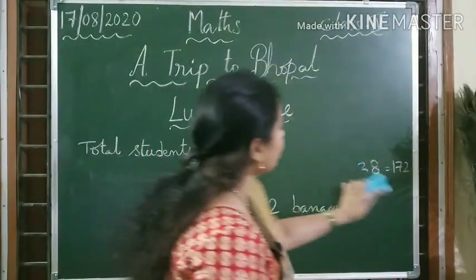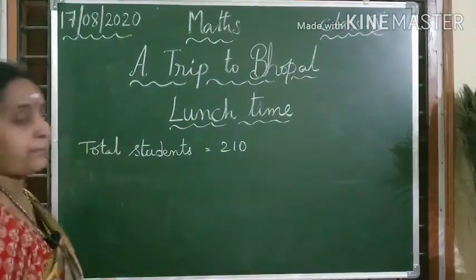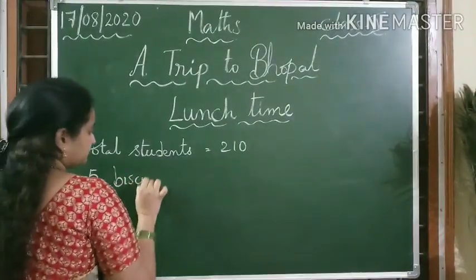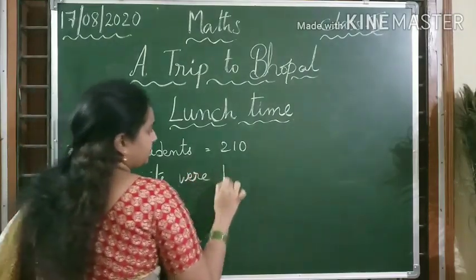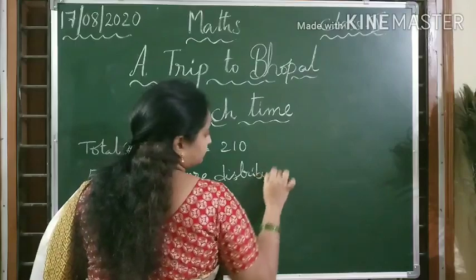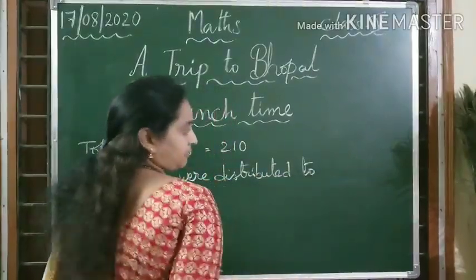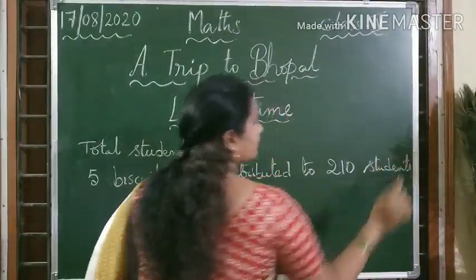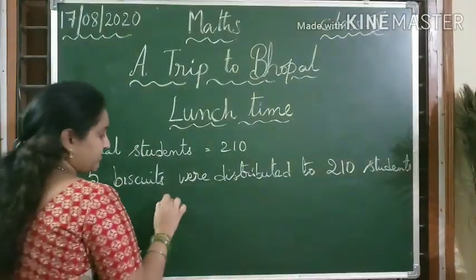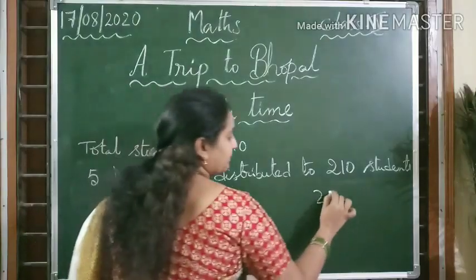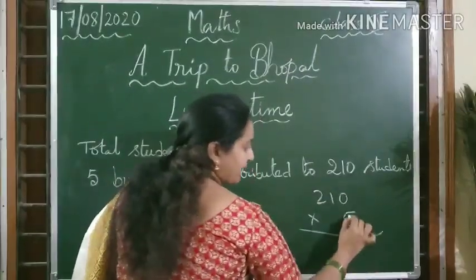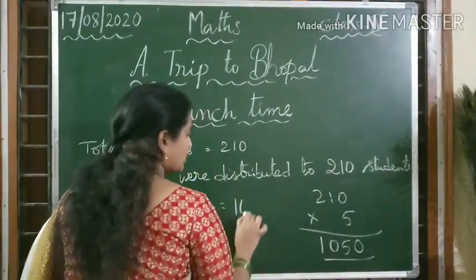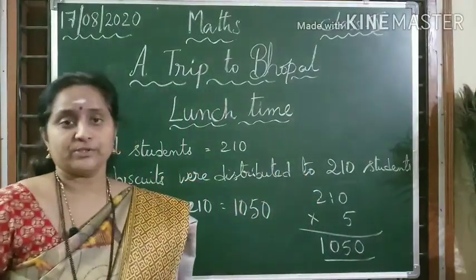Now we need to find out how many biscuits were distributed. Five biscuits were distributed to 210 children. So total number of biscuits: 5 into 210. Multiply it now — five zeros are 0, five ones are 5, five twos are 10. So 1050 biscuits were distributed to the children.